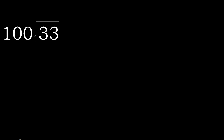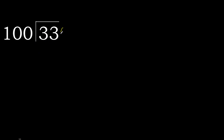33 divided by 100. 3 is less, therefore next. 33 is less, therefore next — that is not a number, therefore complete, always complete with 0 here. 0 point.